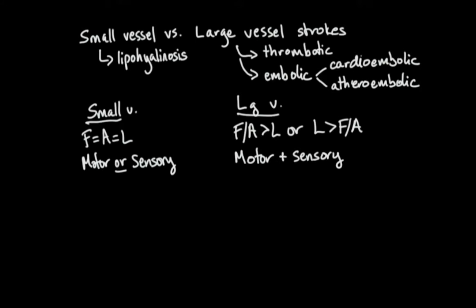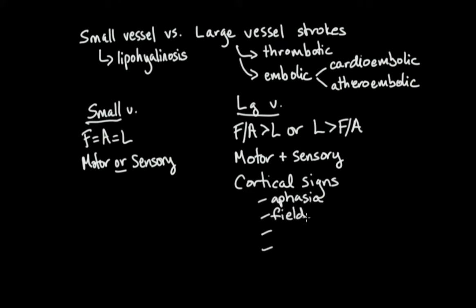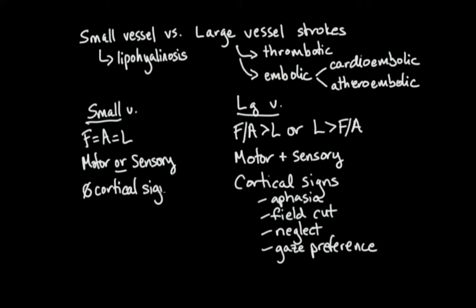With large vessel strokes, since they affect the cortex frequently, you often get what we call cortical signs. The most important cortical signs are aphasia, field cut, hemi-neglect, and a gaze preference. In small vessel strokes you typically don't get any cortical signs. What you often see instead are distinct clinical syndromes that we call small vessel stroke syndromes.